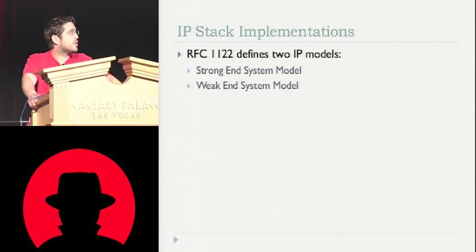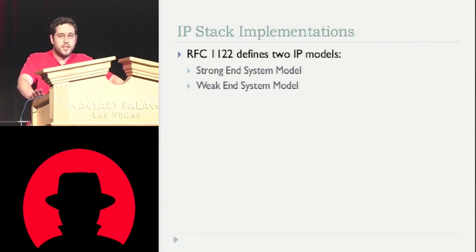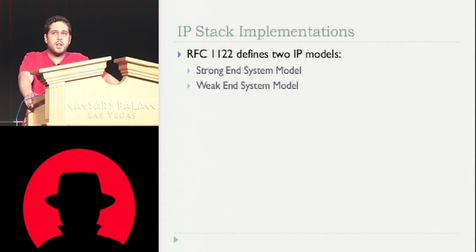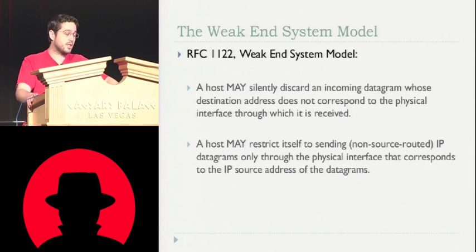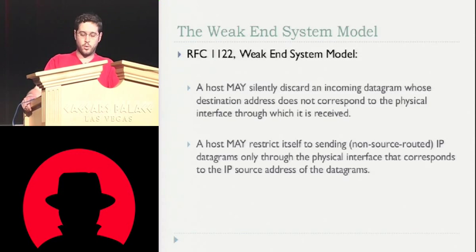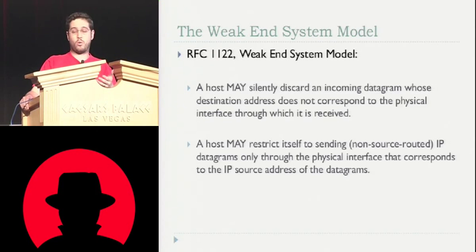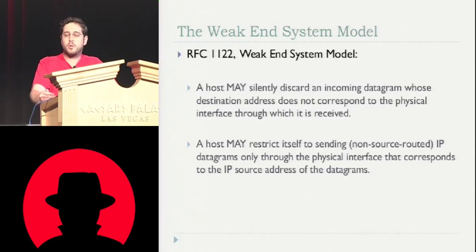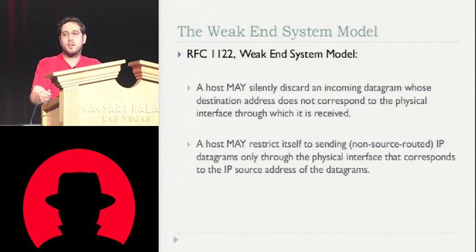RFC 1122 defines two different models for implementing an IP stack: the strong end system model and the weak end system model. Now if you know nothing about these two models other than the names, you'd think the strong model is better — but interestingly enough, the weak model is the more prevalent of the two. It's implemented by Linux, BSD, Solaris, and even previous versions of Windows. What it says is: if I receive a packet, I look at the destination IP. If the destination IP matches any of my IP addresses on any of my interfaces, I will accept that packet and process it — even if it came in on technically the wrong interface.